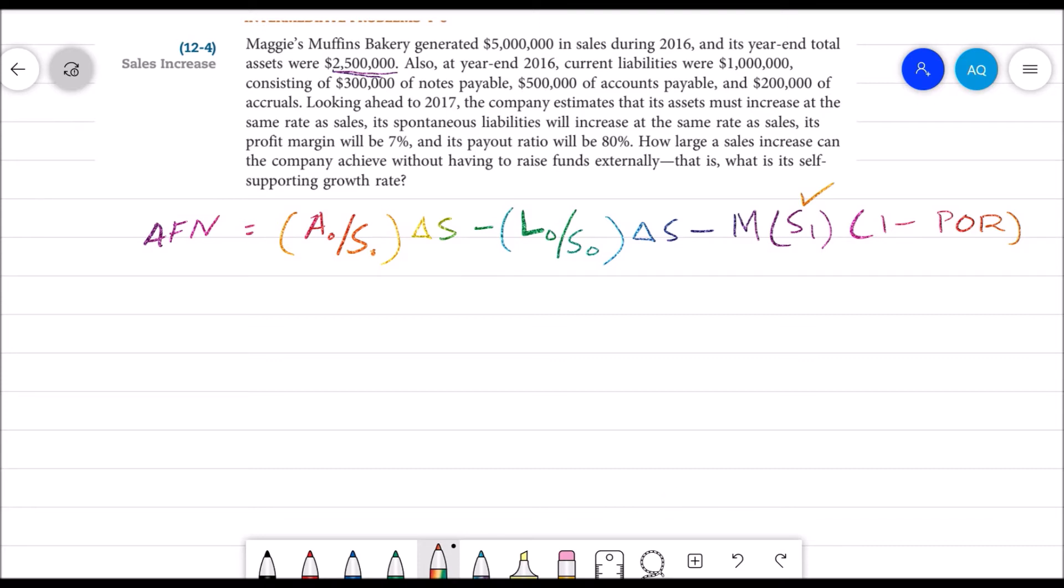Assets we have currently: $2.5 million. Put it there. Our sales of previous year was $5 million. We can write change in sales the same way because we don't have future sales. Then L is spontaneous liabilities.